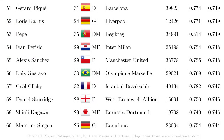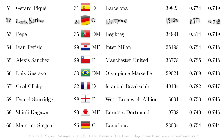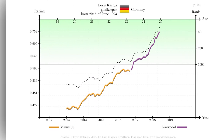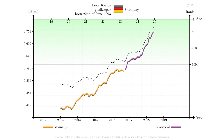Ranked as number 52 we find Loris Karius. Although now perhaps mostly remembered for the Champions League final, the model suggests that he has otherwise performed well with his teams.